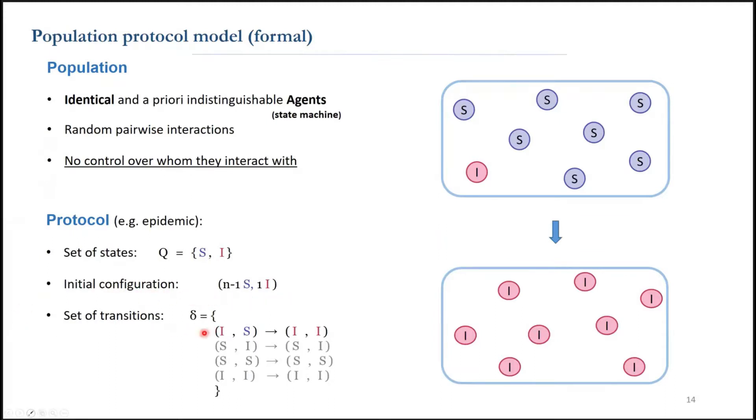As an example, we went over this protocol called epidemic that spreads the information among the population. Usually, we don't mention the null interactions, but I put them here in gray for the sake of this talk.